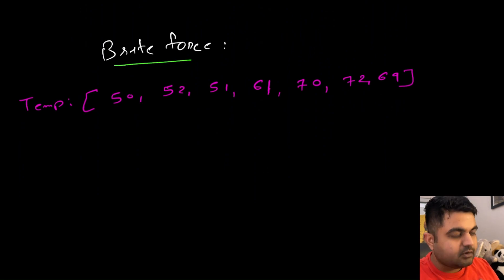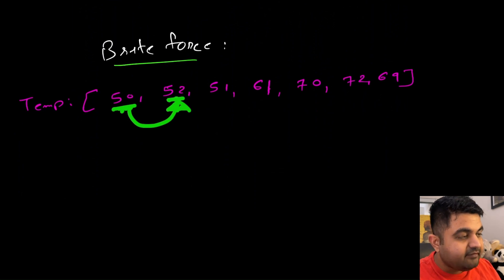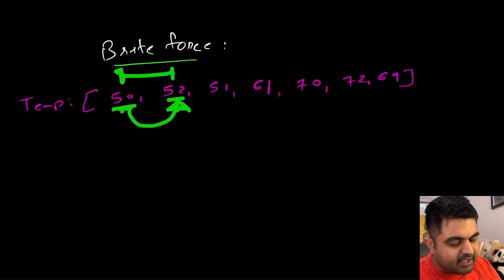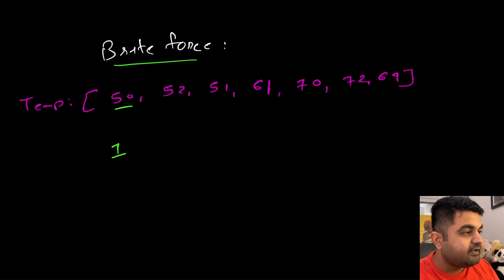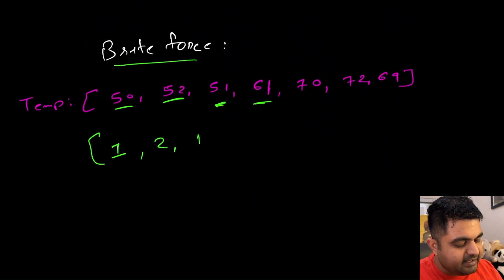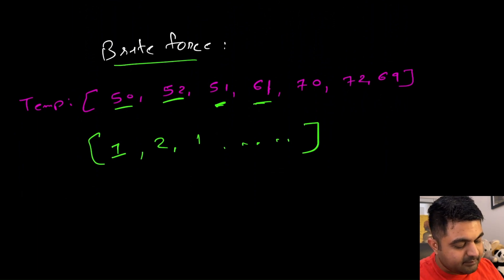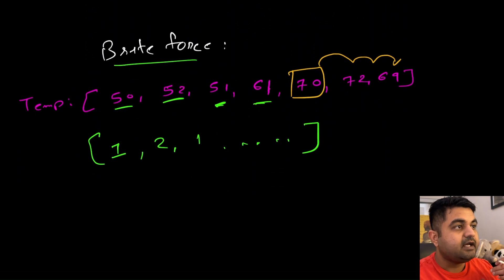Let's try to understand a brute force approach to solve this problem. The idea is very simple — we simply go to a day and then keep iterating the array until we find the next day that has a higher temperature. The moment we find it, we find the difference between the index positions and mark that in the answer. We repeat the same process for every element until the entire answer array is populated.